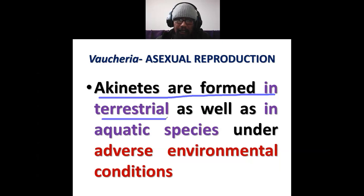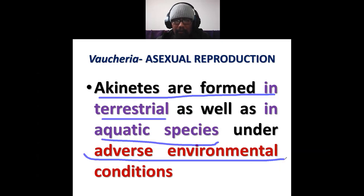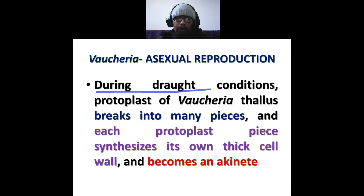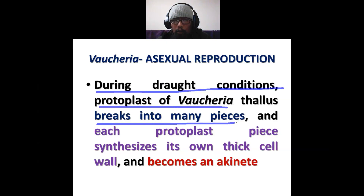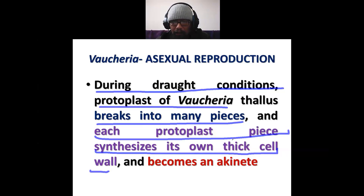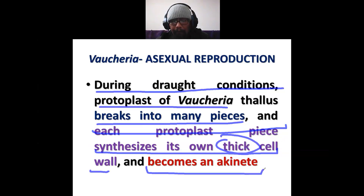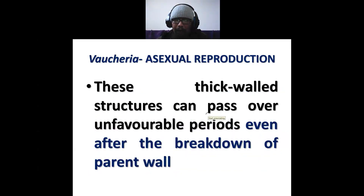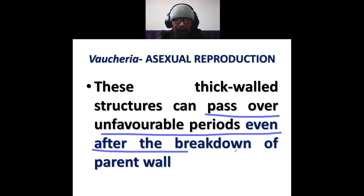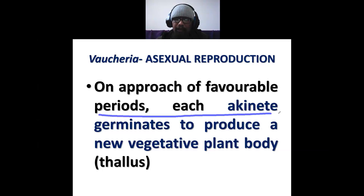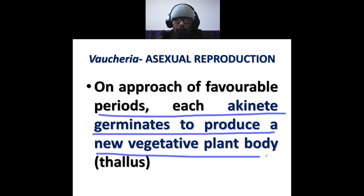Akinetes are formed in terrestrial as well as in aquatic species under extreme environmental conditions. During drought situations, the protoplast of Vaucheria breaks into many pieces, and each protoplast piece synthesizes its own thick cell wall and becomes an akinete. These thick-walled structures can pass over unfavorable periods even after the breakdown of the parent wall, and on approach of favorable periods, akinetes germinate to produce a new vegetative thallus of Vaucheria.